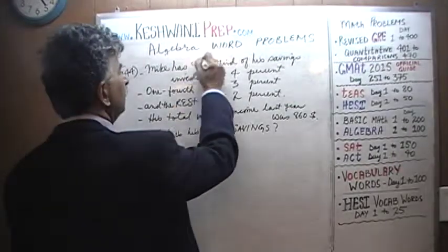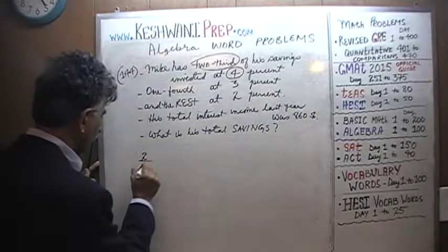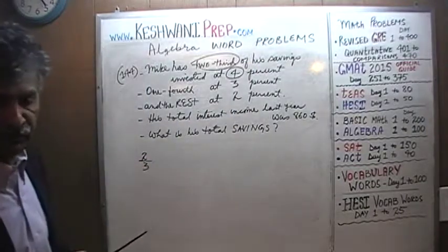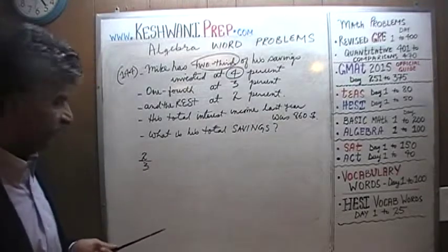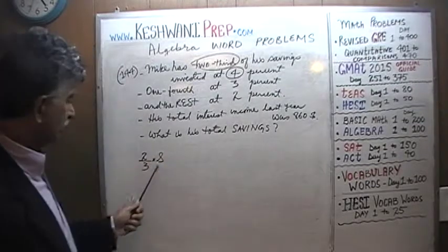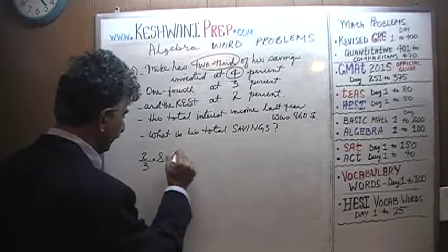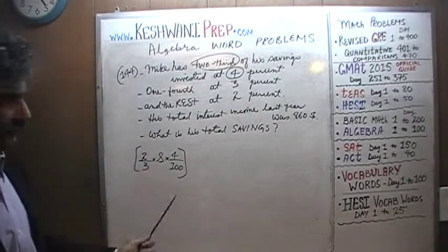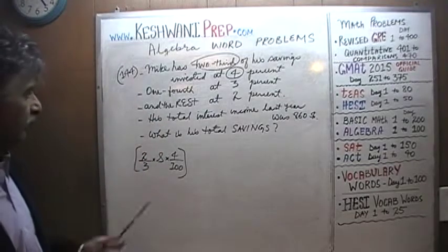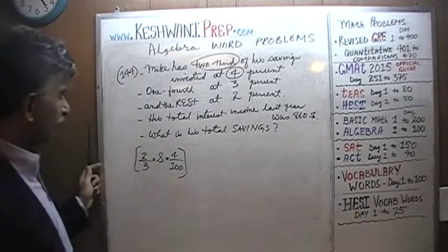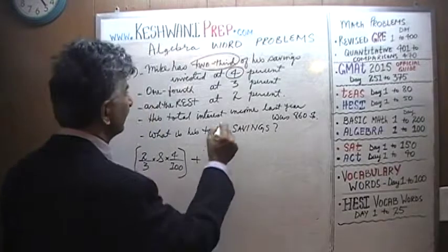He has two-thirds of his savings at 4%. Let's give the savings a name — we'll use the letter S. Two-thirds of his savings is (2S/3), invested at 4%, which is 4 over 100. That's the interest he earns from the first account. In the second account, he has one-fourth of his savings — S over 4 — invested at 3%.